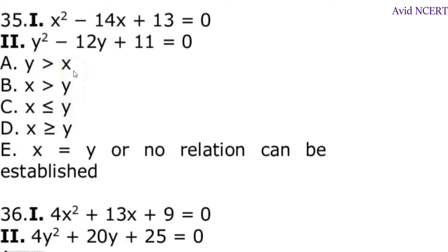Hello viewers, welcome to my channel. This is Geeta. To determine the relationship between x and y, the first equation is x square minus 14x plus 13, and the second equation is y square minus 12y plus 11 equals 0.